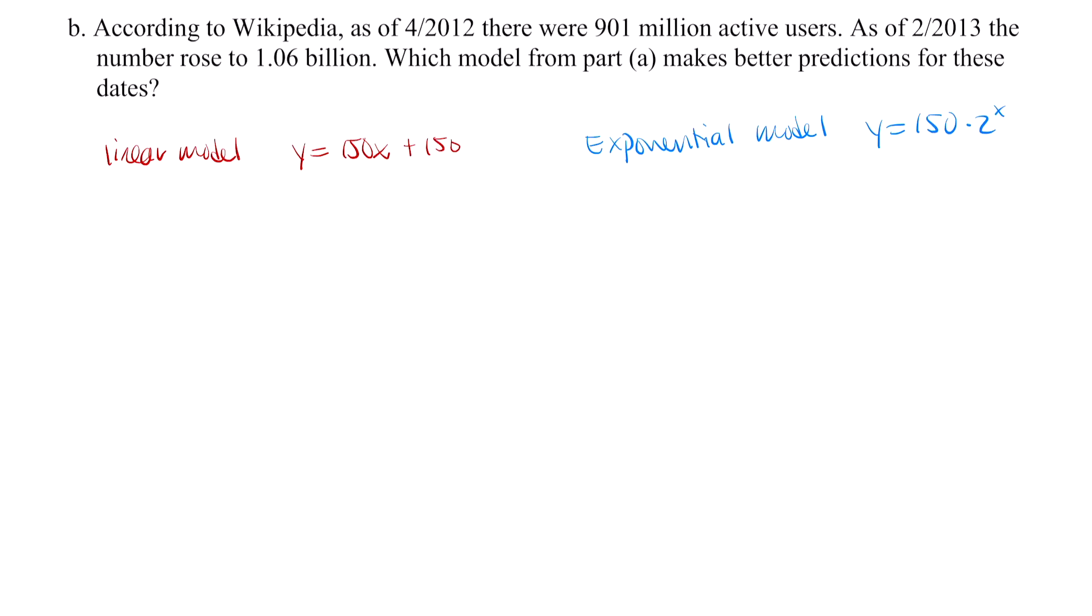How are we going to test these models? Let's write down our two points. We are given in 2012 there were about 901 million active users. 2012 is three years after 2009. Remember, X is number of years since 2009, whereas Y is users in millions. That means 2012 is represented as three, and 901 million active users is 901. And we're also given 2013, which is four years since 2009, there were 1.06 billion active users.